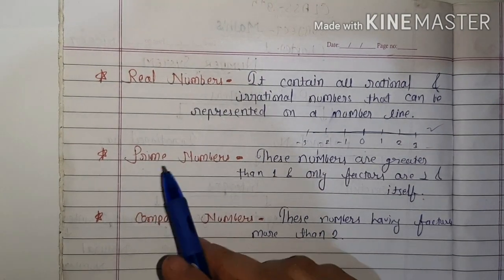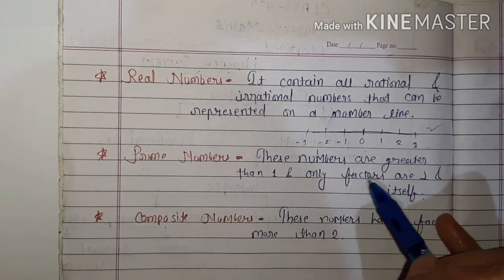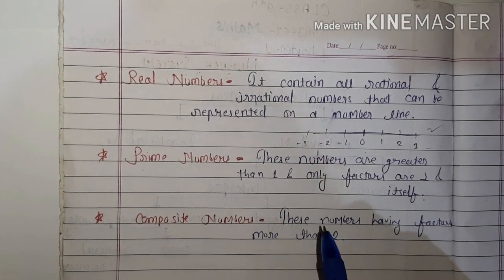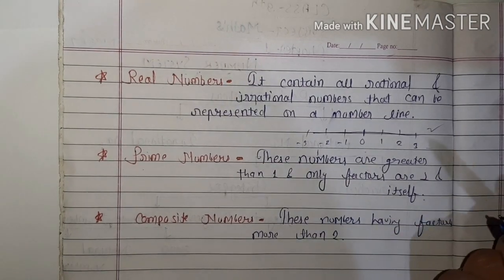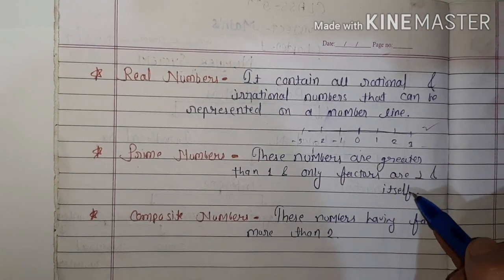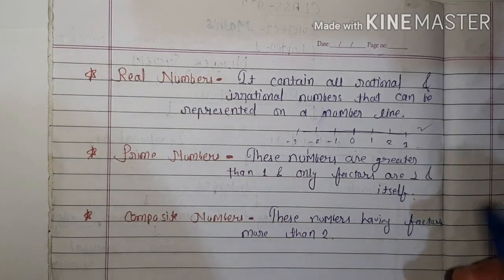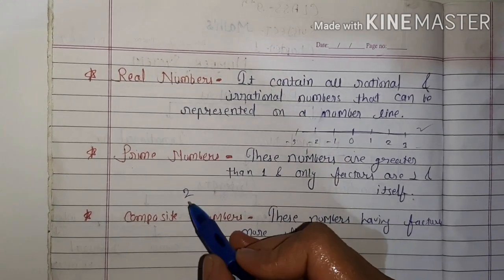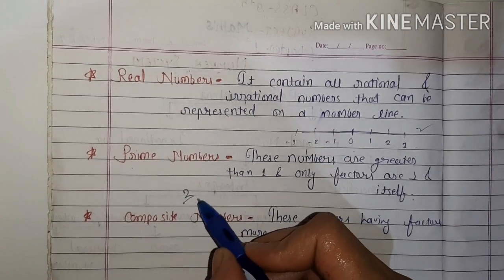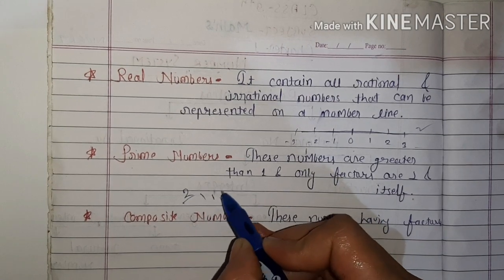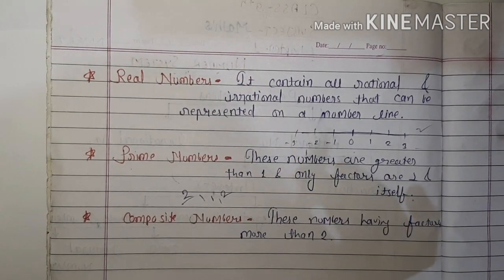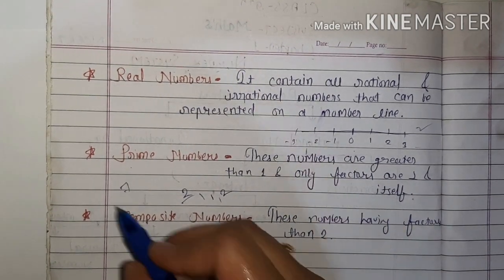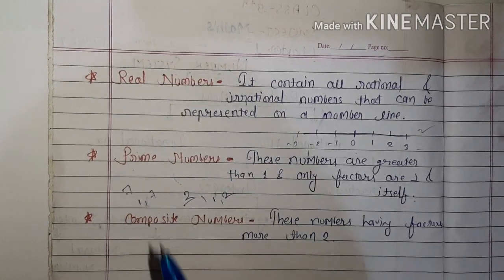What are prime numbers? These numbers are greater than one and have only two factors: one and itself. For example, two is a prime number because two does not appear in any other multiplication table, so its only factors are one and two. Similarly, seven is not in any table, so it only has two factors: one and seven.